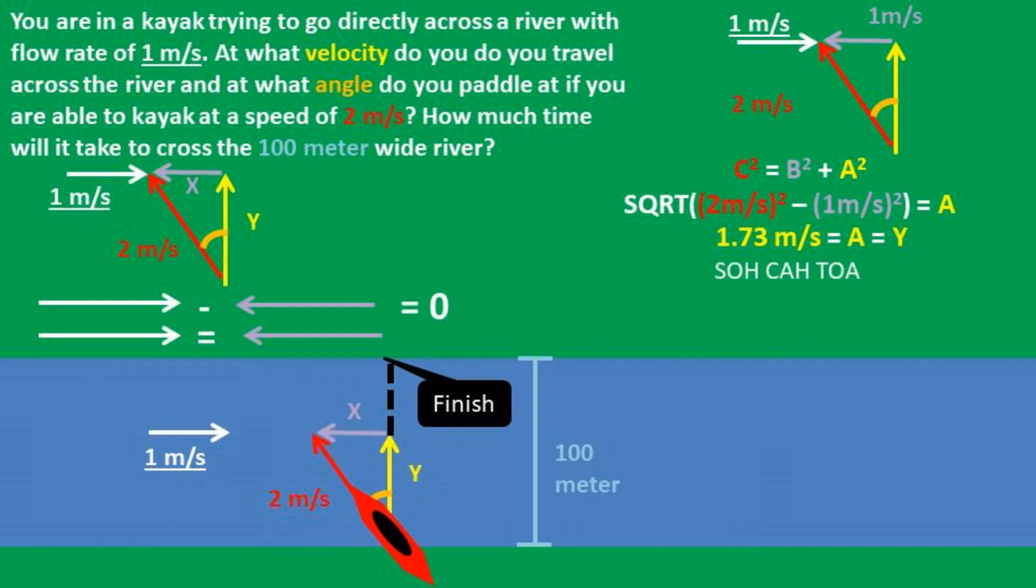Now we can use SOH CAH TOA to solve for the angle that the boat needs to be at to cross the river. We were given the side opposite of the angle and the hypotenuse of the triangle. So let's use the inverse sine of 1 meter per second over the 2 meter per second velocity of the kayak.